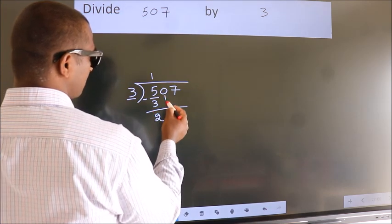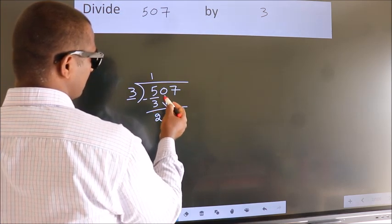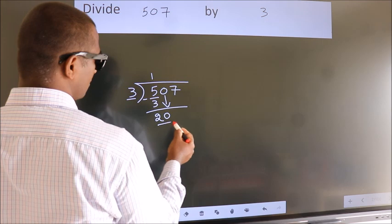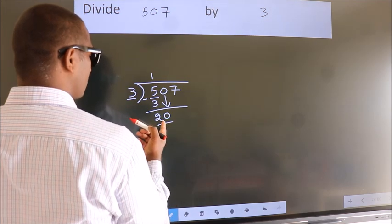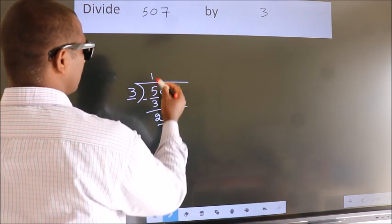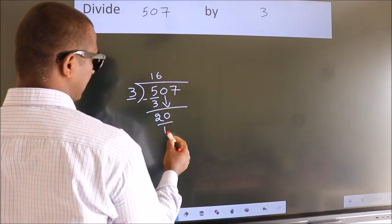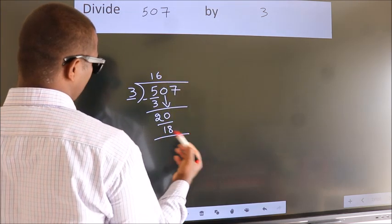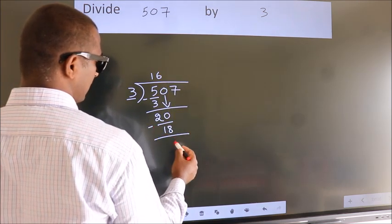After this, bring down the next number. Bring 0 down, so we have 20. A number close to 20 in the 3 table is 3 times 6, which is 18. Now we subtract and get 2.